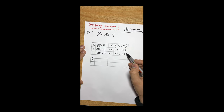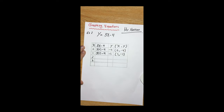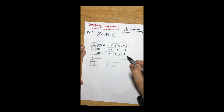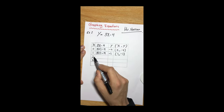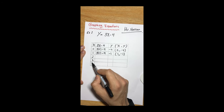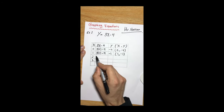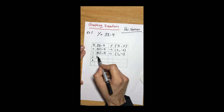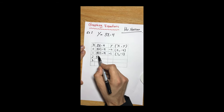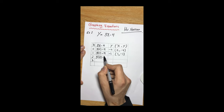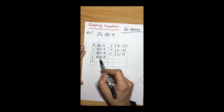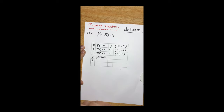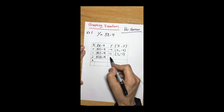We can already draw the graph using these two points, but let's finish the other two. Let's input two as x: 3 times 2 minus 4 — three times two gives us six, and six minus four is equal to two.